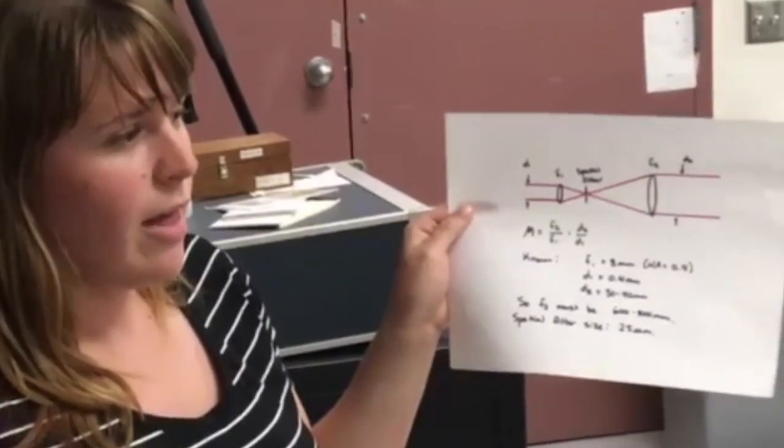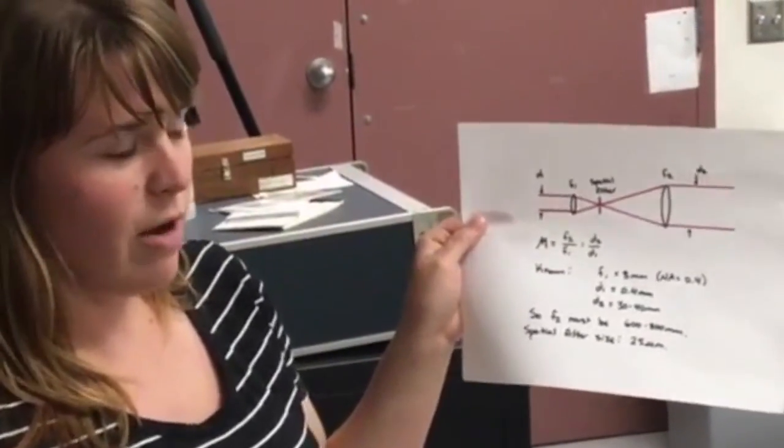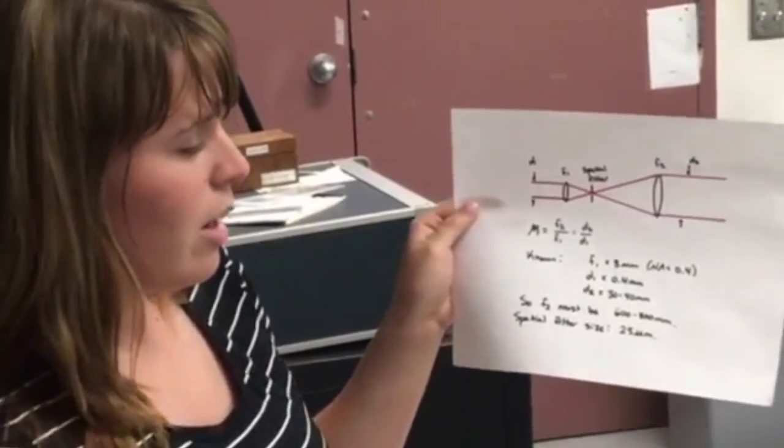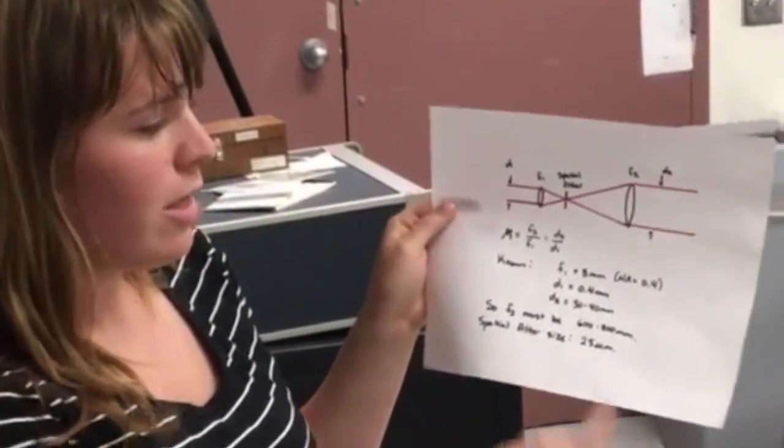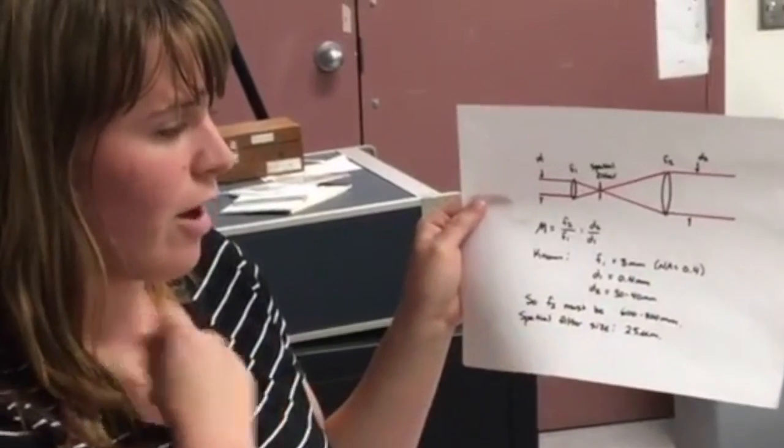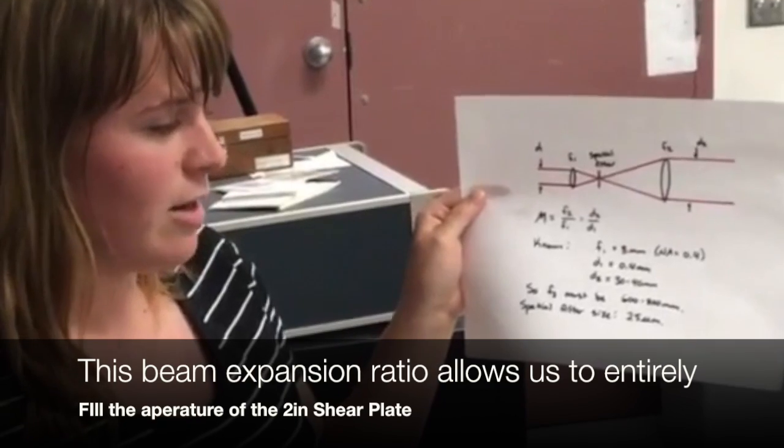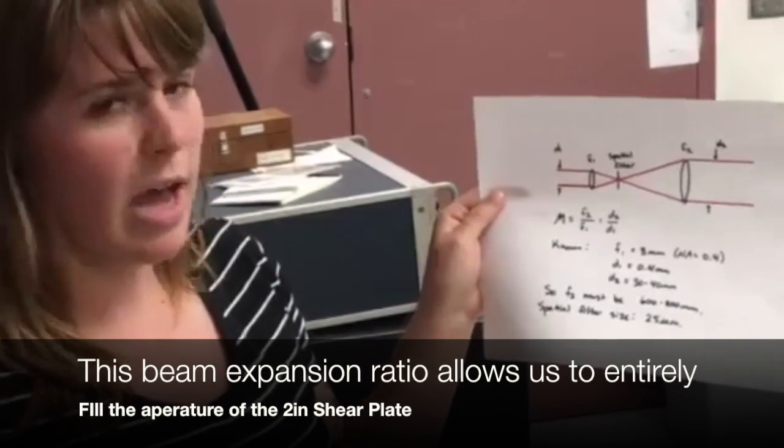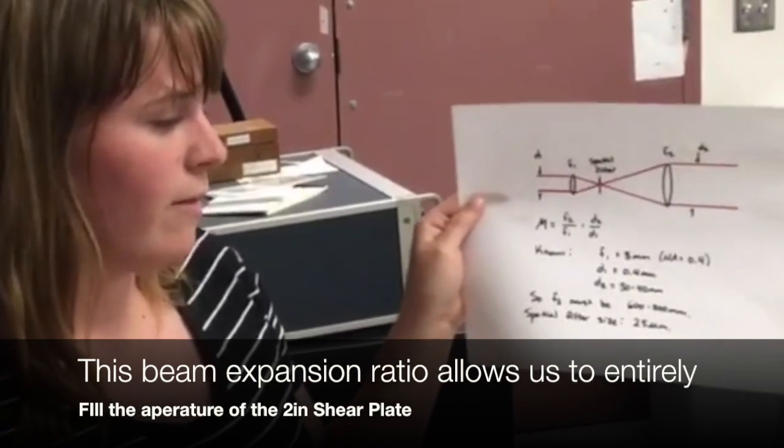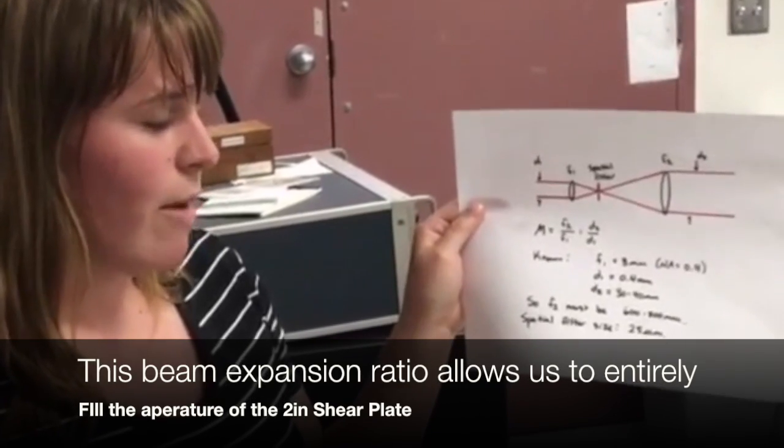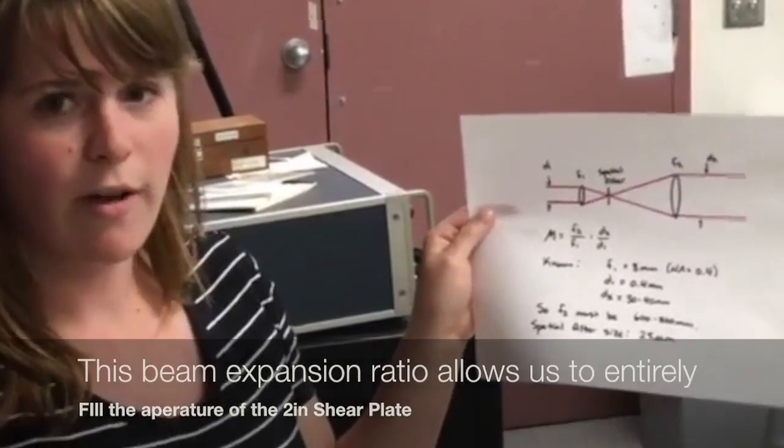We had a lens that was available to us that was 800 mm, so we ended up using that one. Using the NA of 0.4 for our 20x microscope objective, we also calculated that our spatial filter size needed to be 15 microns. But we only had 10 and 25 microns available, so we used the 25 micron pinhole so that we would have the whole Gaussian profile.